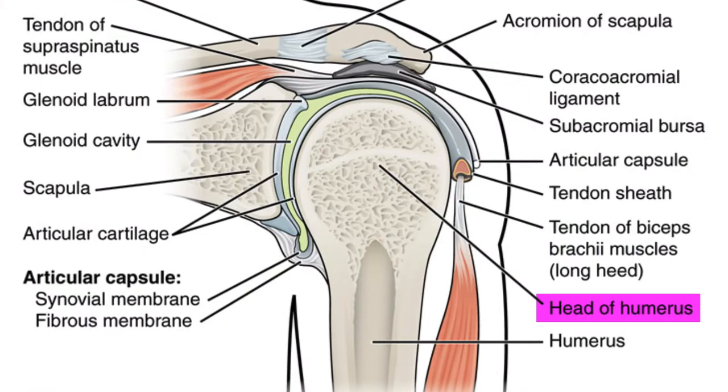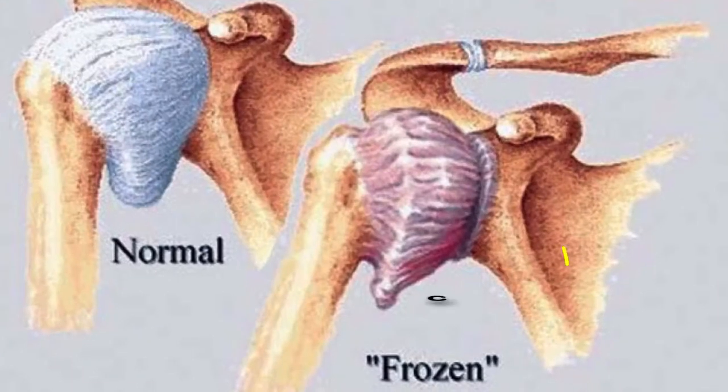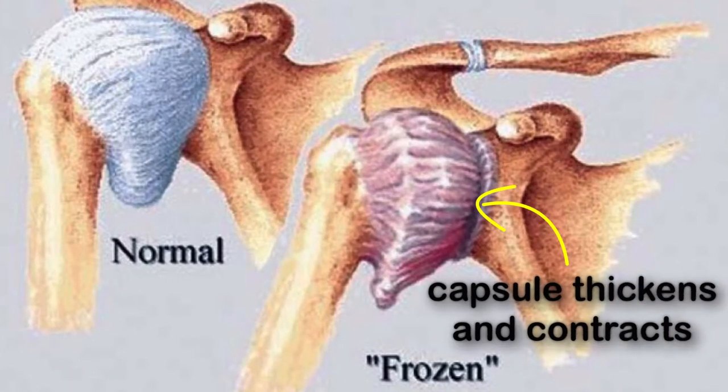Our shoulder joint is a very flexible joint. The humerus bone articulates with the shoulder blade bone, and this is surrounded by a tough connective tissue known as the capsule, which is filled up with a lubricating fluid known as synovial fluid. Frozen shoulder or adhesive capsulitis occurs when the capsule thickens and contracts after a period of inflammation or immobility, with a reduction in the lubricating synovial fluid. This then results in pain and reduction in the range of motion of the shoulder joint.